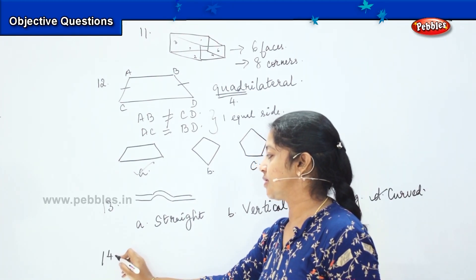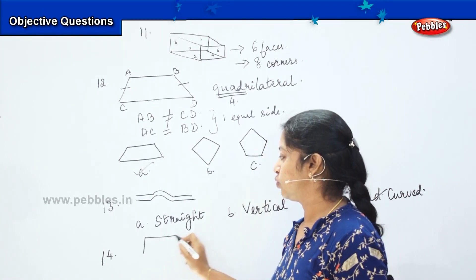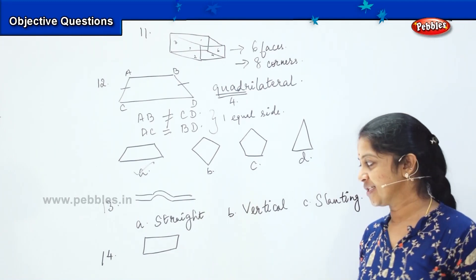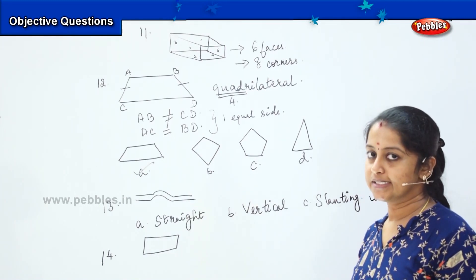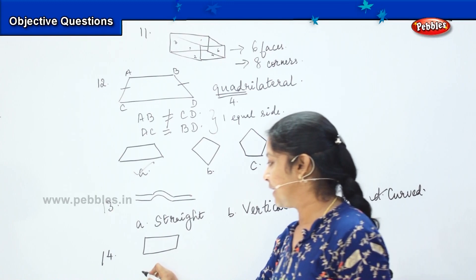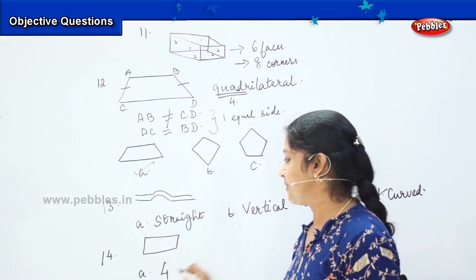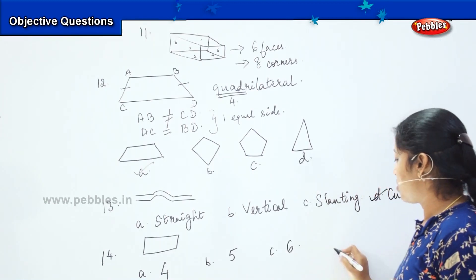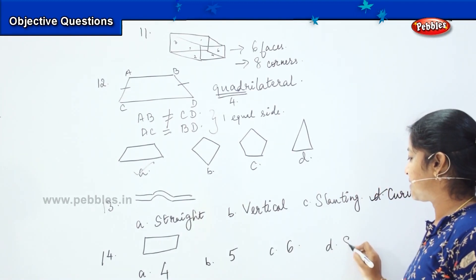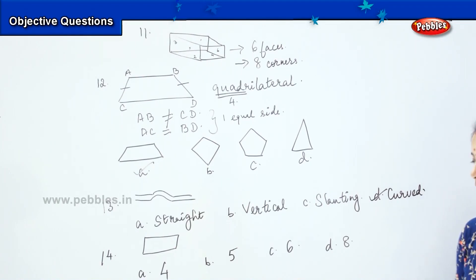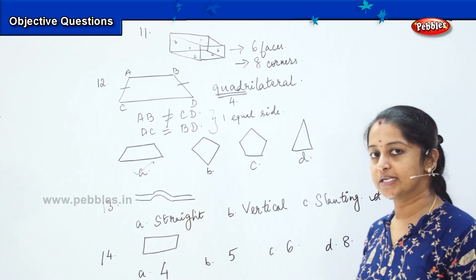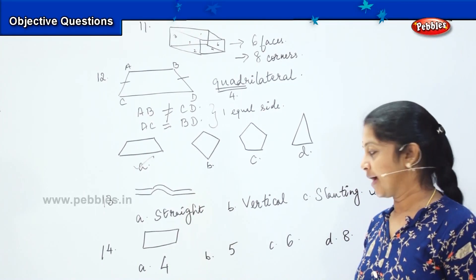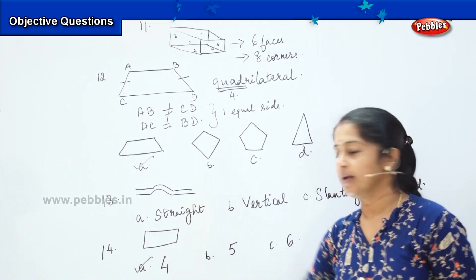Shall we move to the next question? Here is your next question. You all know this is a rectangle. Your question is: how many sides does a rectangle have? Is it 4, 5, 6 or 8 sides? Count the sides — 1, 2, 3 and 4. So, the right option is answer A: 4 sides.